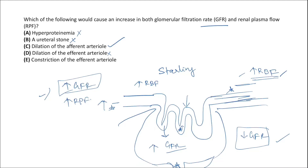Constriction of the efferent arteriole would increase hydrostatic pressure in the glomerular capillaries, increasing GFR, but the constriction also increases resistance, causing a decrease in renal blood flow — so this is also a wrong choice. Therefore, dilation of the afferent arteriole is the correct answer.